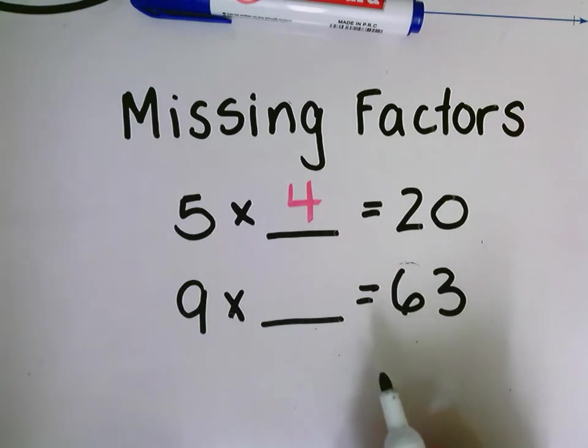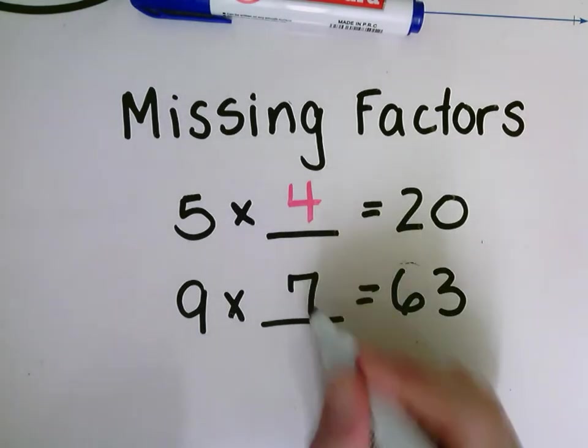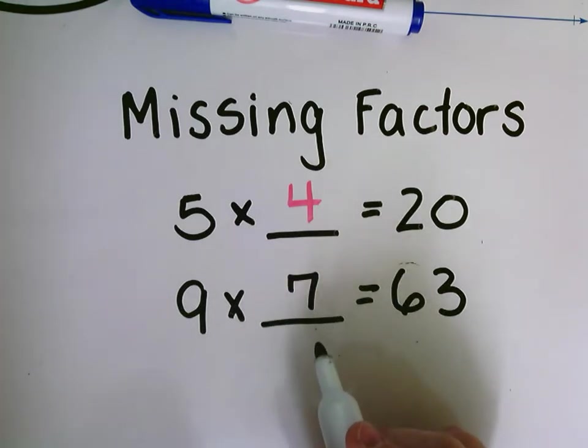I can think about all my nines. Wait a second, I know nine times seven equals 63. So my missing factor here is seven.